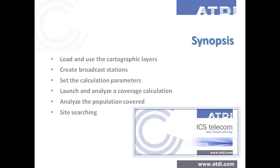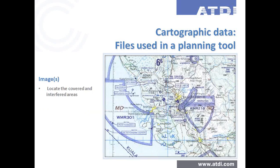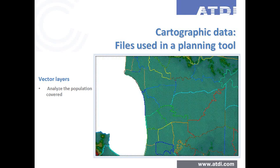Cartographic data is one of the key inputs of a radio planning tool. You use a digital terrain model for propagation calculation, together with a clutter layer consisting of classes describing ground occupancy, also used for propagation calculation, complemented by an image layer. An important layer for broadcast analysis is the vector layer, which defines areas, districts, cities, and borders — specifically for population analysis in order to generate relevant reports by area.